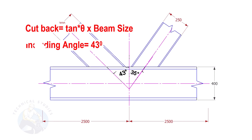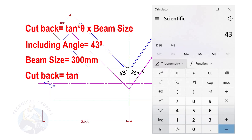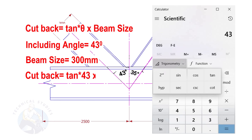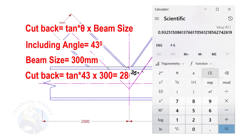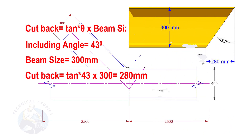If the including angle is 43 degrees and the size of the beam is 300, the cutback is tan(43) into 300. The answer is 279.7, so let us write it as 280 millimeters.